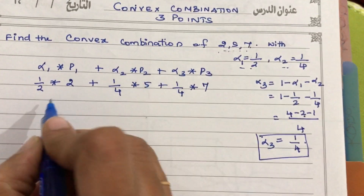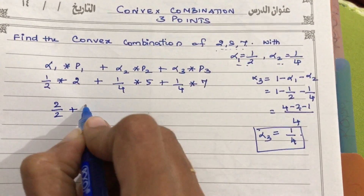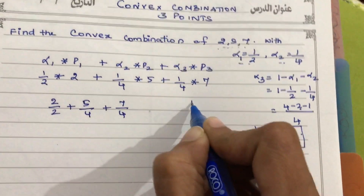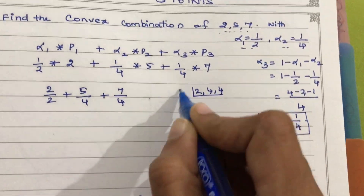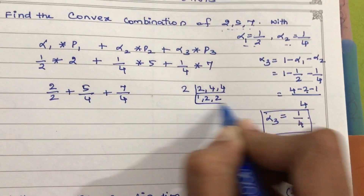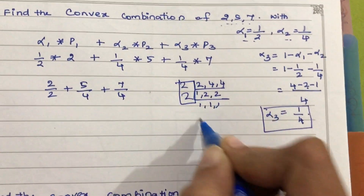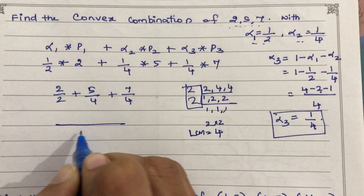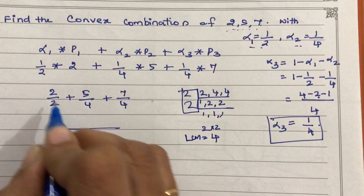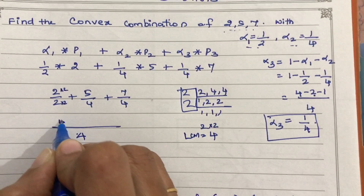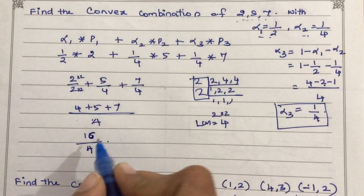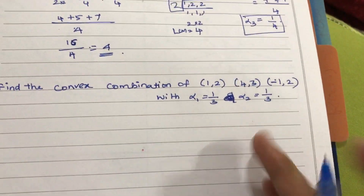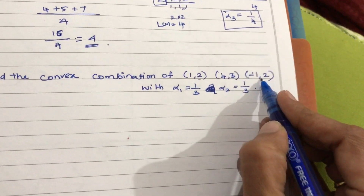Since you do not have a y-coordinate, you can just directly do the addition because you have only a one-point system. The LCM will be 4. So you take 4: it is 4 plus 5 plus 7, which is 16. So 16 by 4 is equal to 4. That is your answer for the first example.